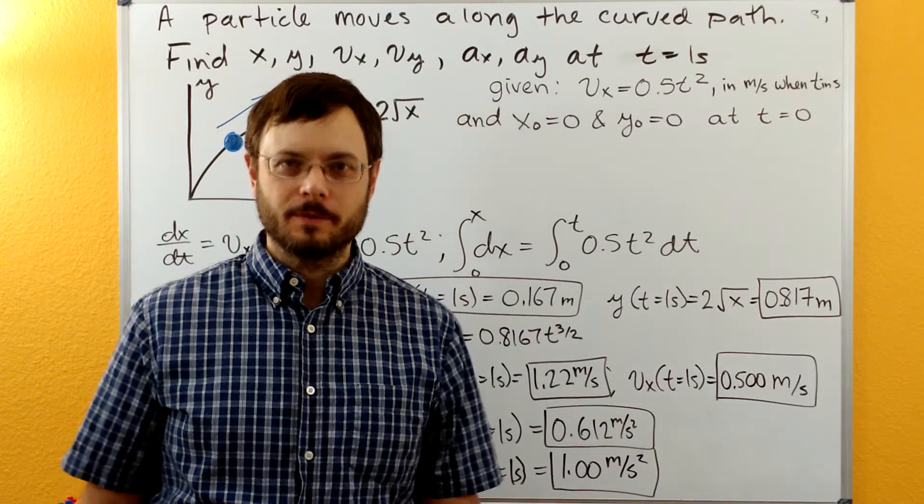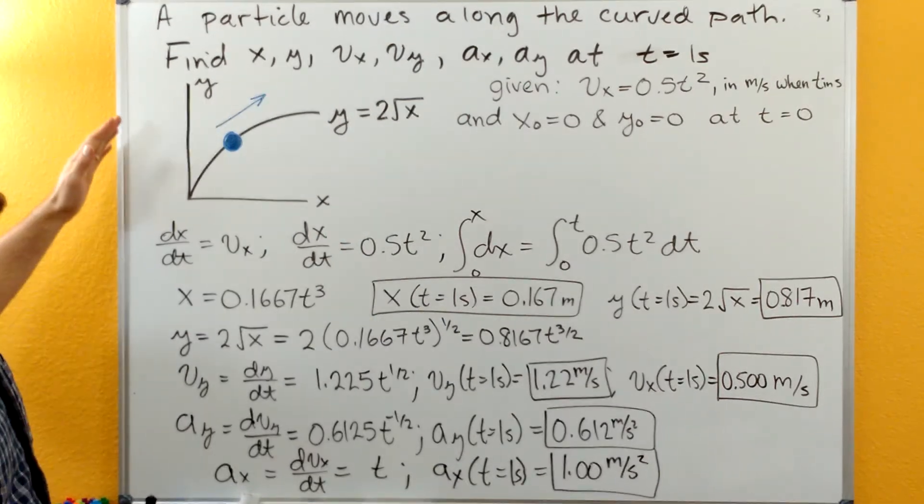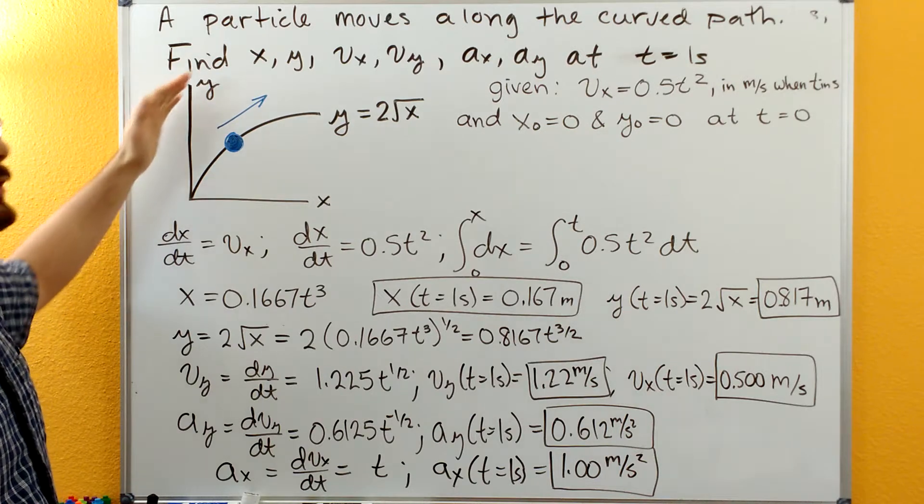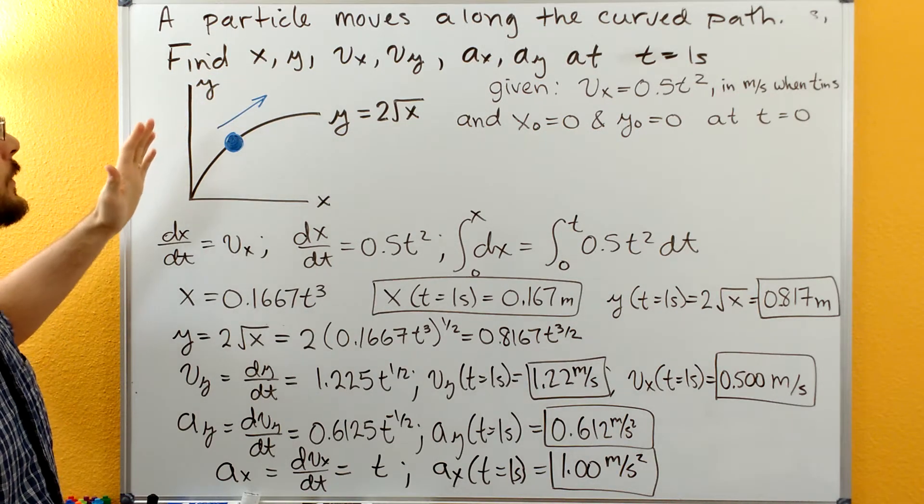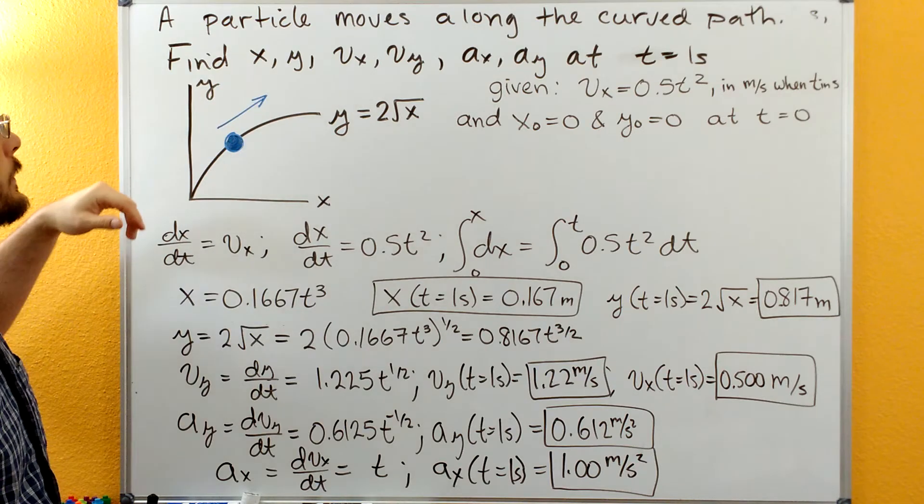Welcome to the dynamics tutorials. With this problem, we have a particle that's following a curved path. This is called curvilinear motion—we're going along a curved line in the plane.